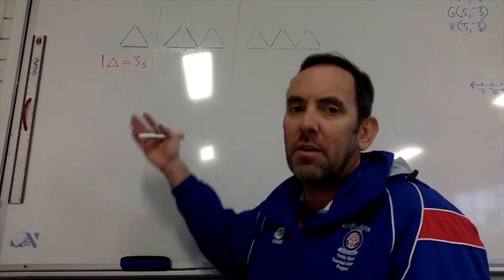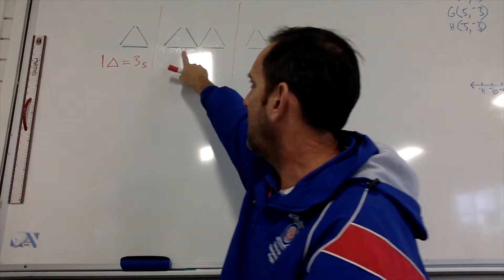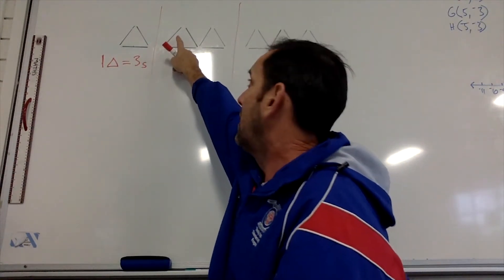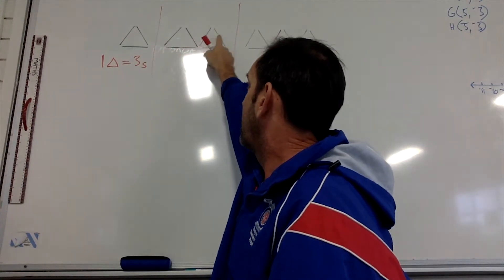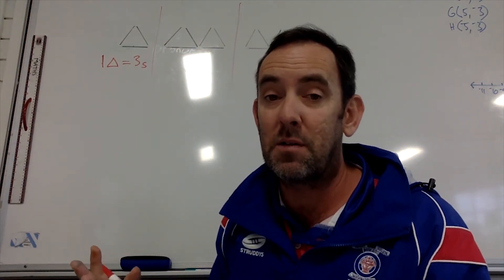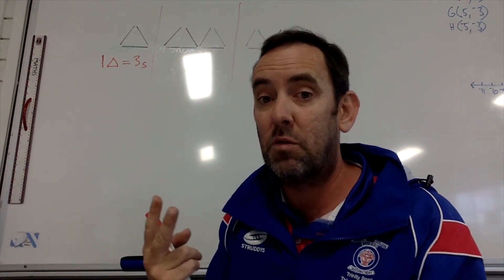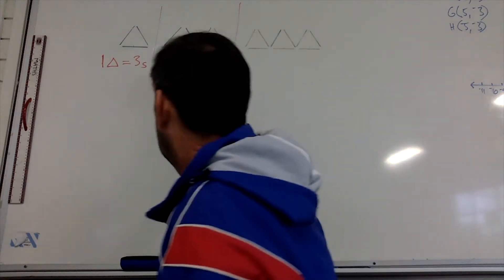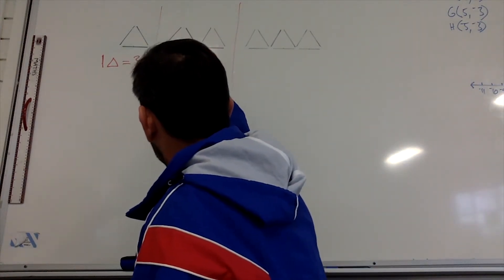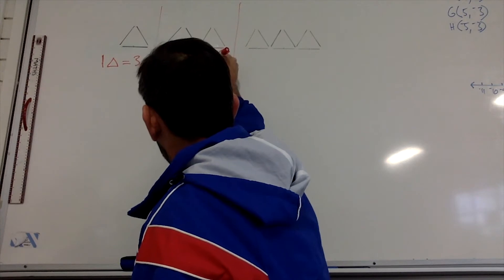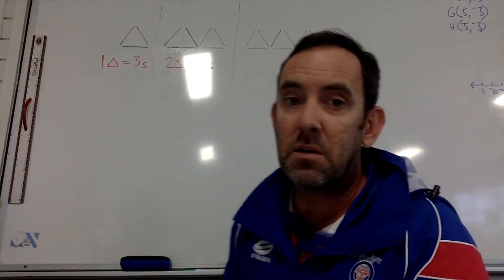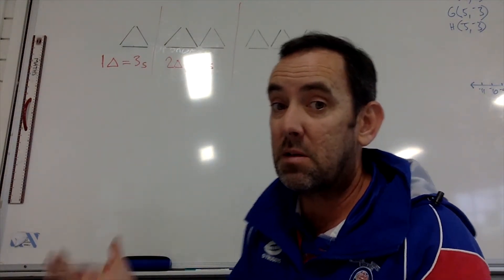We look at the second one and we count the number of matchsticks again — we've got six matchsticks. So two triangles equals six sticks. Makes sense.